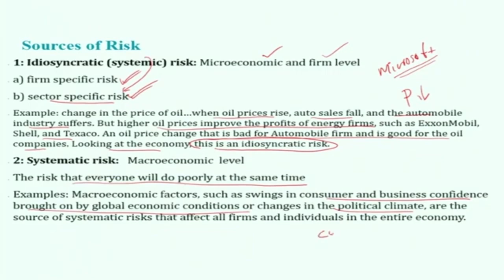COVID-19 is another example of systematic risk. It initially started with COVID and affected both the supply side and demand side of the economy. It became a global recession, aggravating economic conditions, with negative economic growth in most economies across the globe.